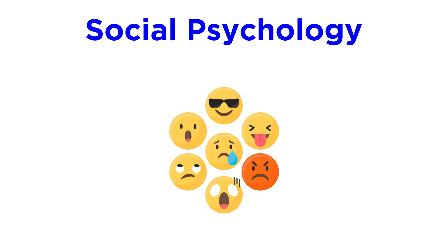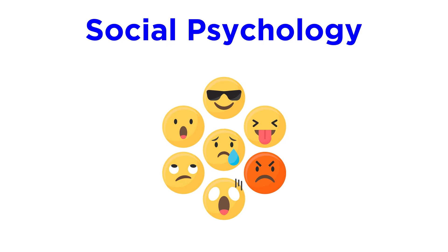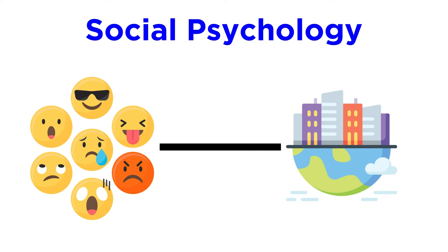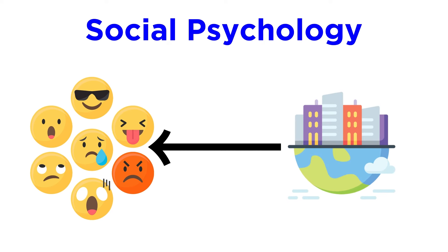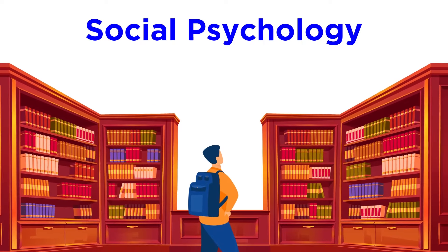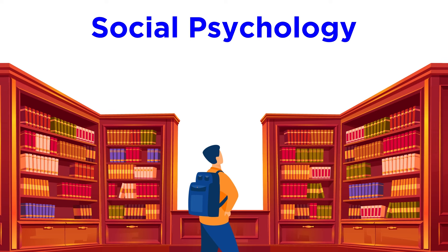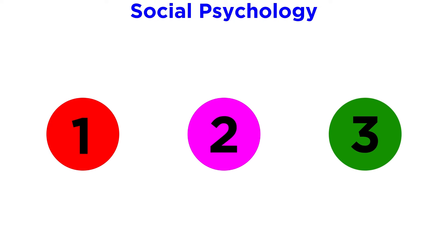At its core, social psychology attempts to understand how a person's behavior is influenced by the social context where it takes place. Like developmental psychology, social psychology is a huge field, and we could spend an entire series examining all of its fascinating aspects. However, we're going to introduce the subject by looking at three major points in social psychology over the next three tutorials.